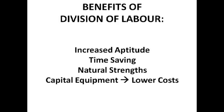Division of labour also plays to someone's natural strengths. For example, if I'm not the strongest, putting me in charge of a lifting task would be pointless. But if you divide the labour and give me a job I'm good at — say I was a really good painter — you'd be playing to my strengths, so you'd get a better quality product, probably faster too. It also means people can focus on what they're best at, which is good for them and makes for a nicer working environment.